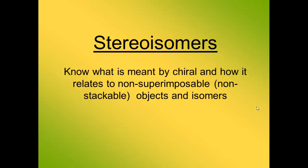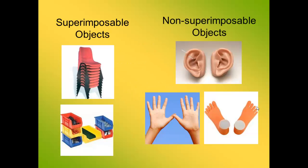Know what the word chiral means and how it relates to non-superimposable, or sometimes non-stackable, objects and isomers. Superimposable objects are ones that can be stacked one on top of the other, like these chairs and storage containers. Non-superimposable objects are those that cannot be stacked one on top of each other. Non-superimposable objects have a left and a right configuration, like our ears, our hands, and our feet.